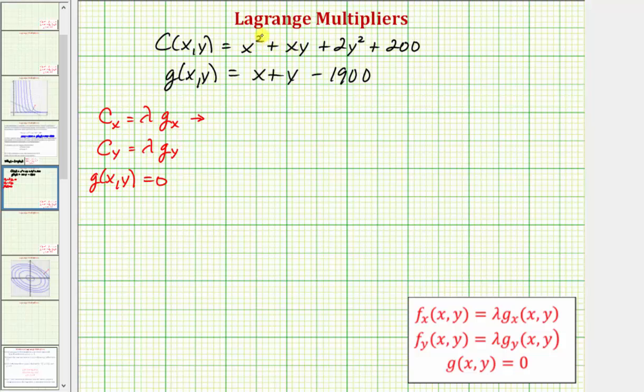So the partial of C with respect to x would be 2x plus y. Because we're differentiating with respect to x, treating y as a constant, we have equals lambda times the partial of g with respect to x, which would just be 1, so we can leave this as lambda.